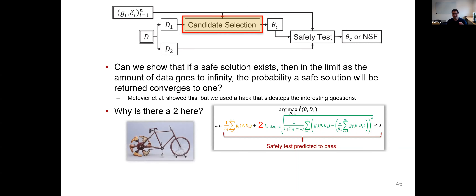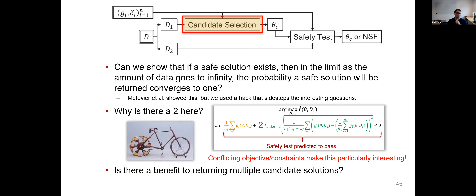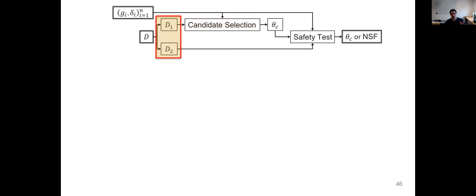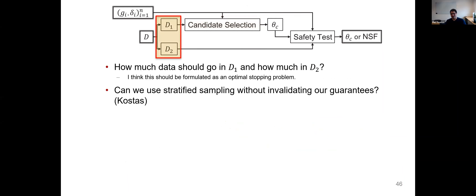I think of our existing algorithms like a bicycle — proofs of concept showing it can work, but a duct-taped-together solution from existing components. There's tons of room for improvement. The factor of two in candidate selection is only really necessary when the safety constraint conflicts with the primary objective. Is there a benefit to returning multiple candidate solutions? In the diabetes route, we enumerated a large set of possible solutions, checked all for safety, then picked the best. Other open issues: how much data to put into D1 versus D2 is really an optimal stopping problem — you should keep pulling data into candidate selection as long as it helps find better solutions, but stop when it would widen the safety test confidence intervals.